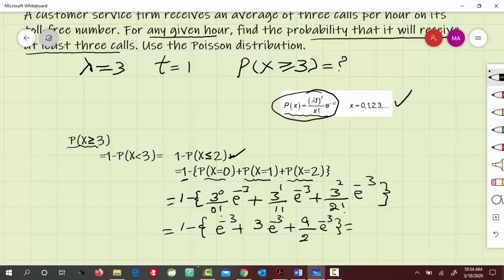Simplifying this, we get 0.4232. Then 1 minus 0.4232 equals 0.5768. That is the final answer.